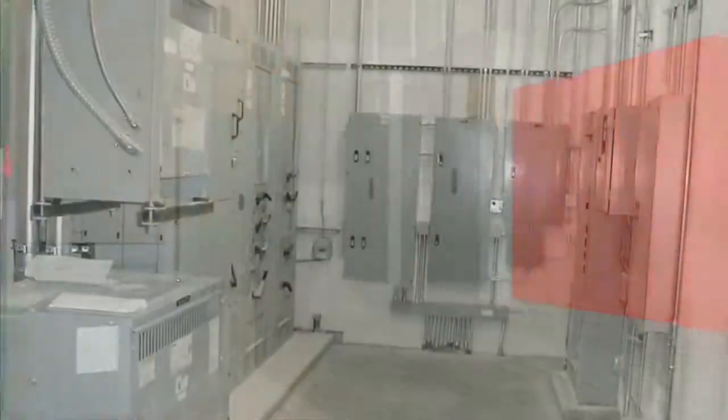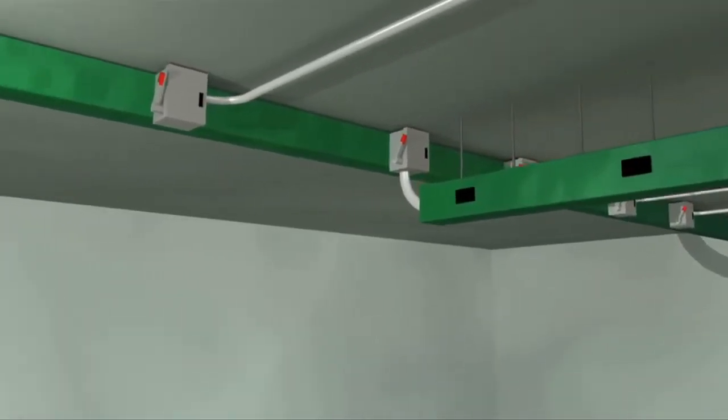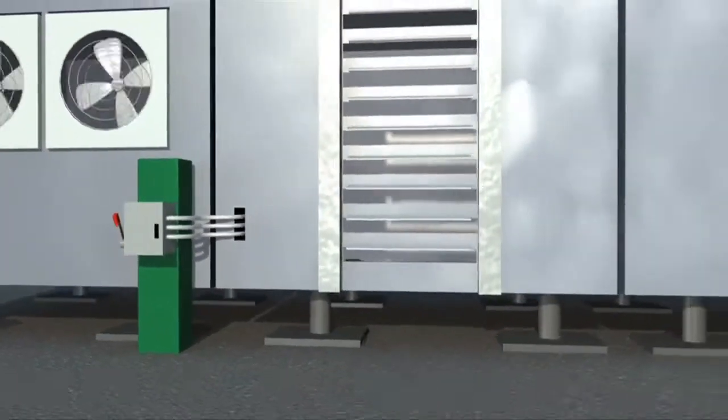These rooms generally house breaker panels, one or more transformers, and or disconnect switches. Power is then distributed throughout the floor. The bus duct reaches the roof to supply power to HVAC systems through a disconnect.